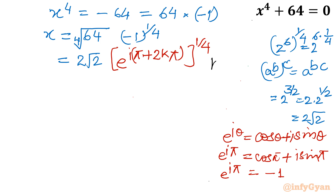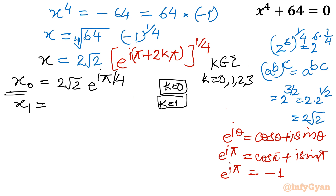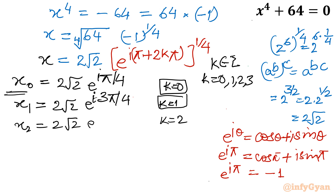Here k is an integer beginning from 0, 1, 2, up to 3, since there are 4 roots. So for k = 0: x₀ = 2√2 · e^(iπ/4). For k = 1: x₁ = 2√2 · e^(i·3π/4). For k = 2: x₂ = 2√2 · e^(i·5π/4). For k = 3: x₃ = 2√2 · e^(i·7π/4).